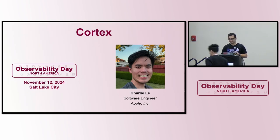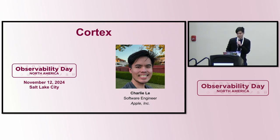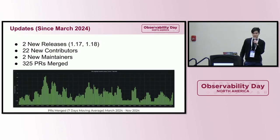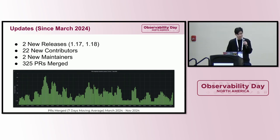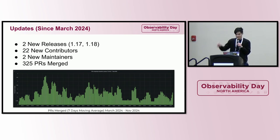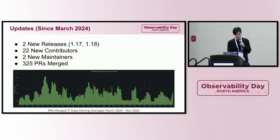Hello everyone, I'm Charlie. I'm a software engineer at Apple and also a Cortex maintainer. Updates since March 2024: we had two new releases — 1.17 and 1.18. We also have 22 new contributors, so the project is healthy and more people are coming in all the time. We also have two new maintainers — one of them is me — and 325 PRs merged. The graph of PRs merged since March 2024 with a seven-day moving average shows the project is healthy.